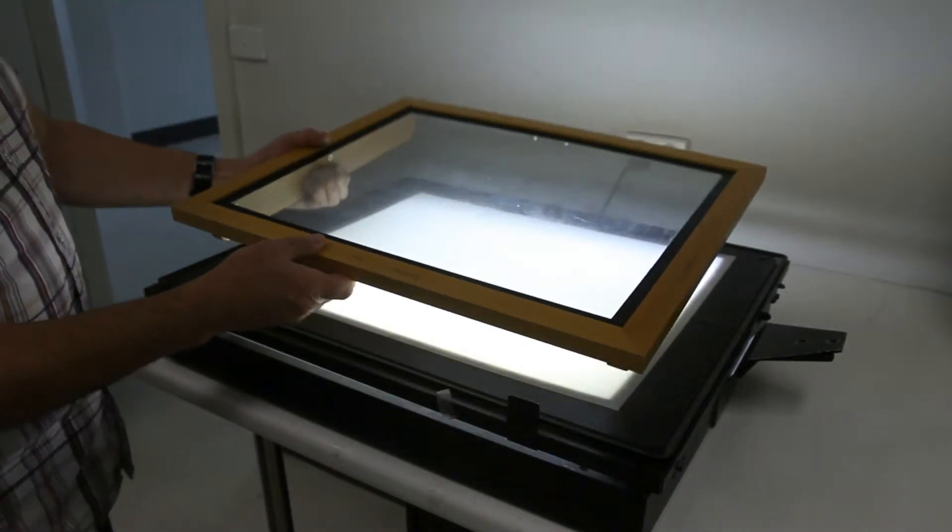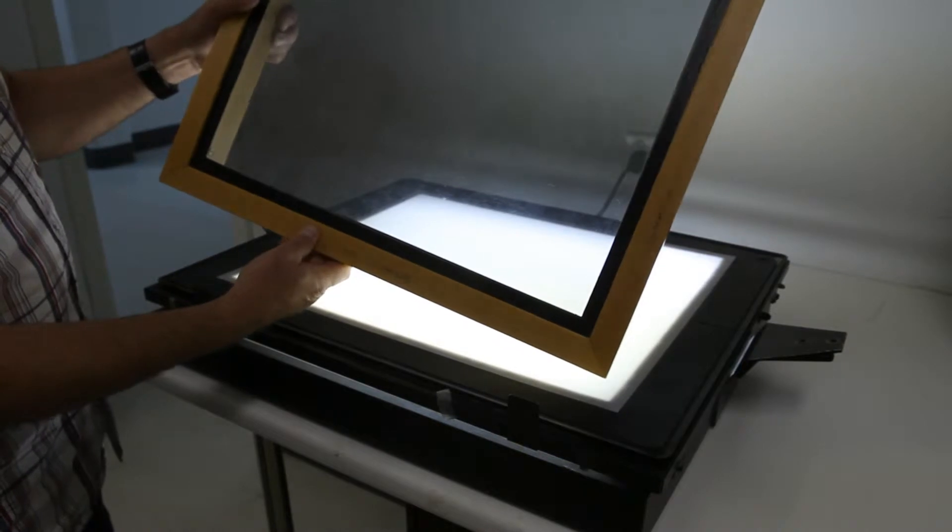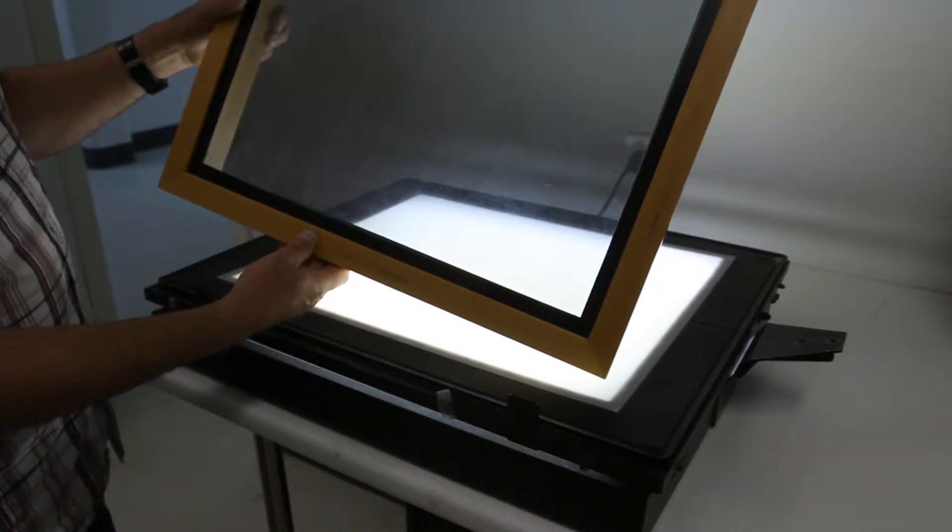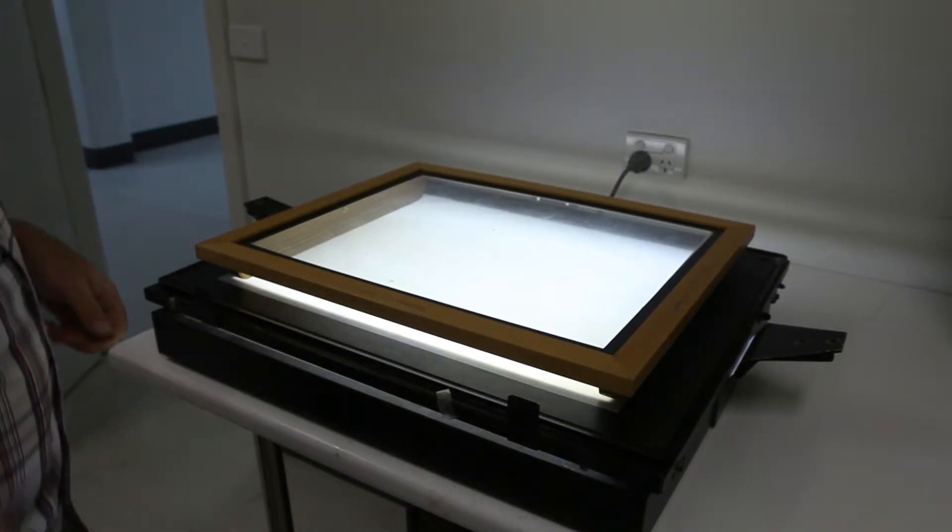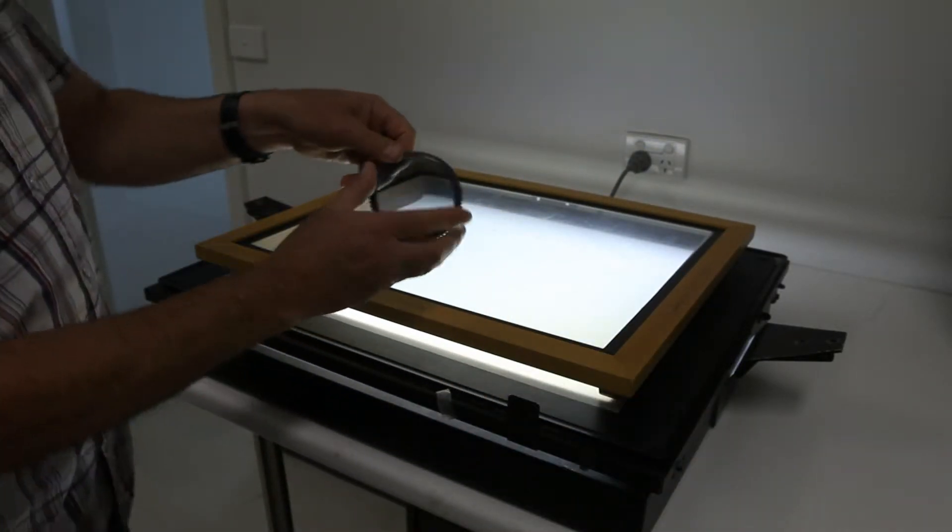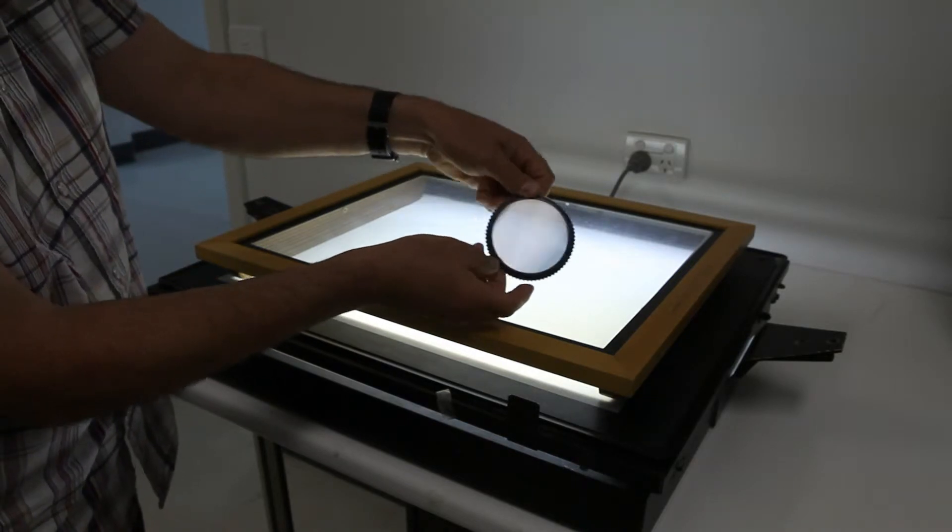One of them will be a large polarising sheet, and this sheet is available from the technician store. You place that on top of the light box, and the other filter you'll put over your camera lens.